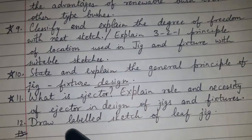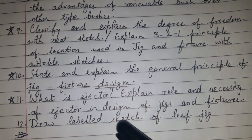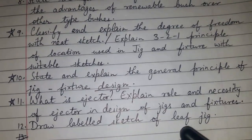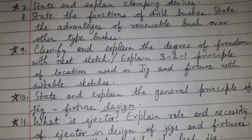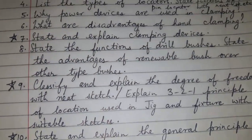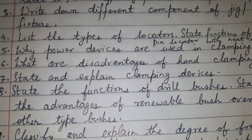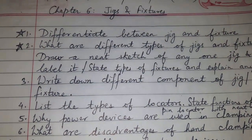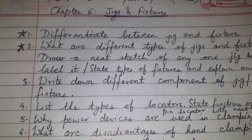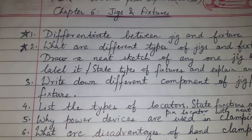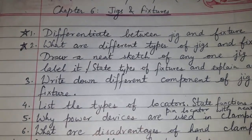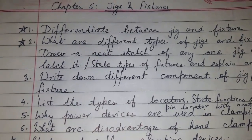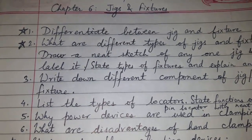Draw a labeled sketch of a leaf jig. These were the questions from the question bank for chapter number six — jigs and fixtures. Please like, comment, share, and subscribe. Thanks for watching.